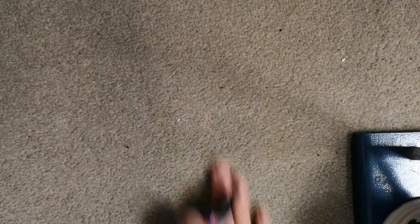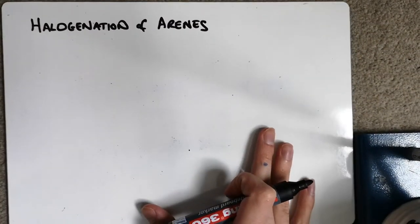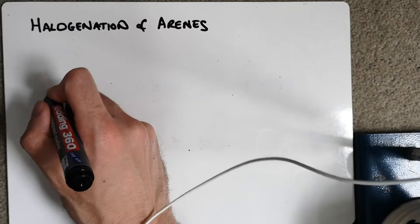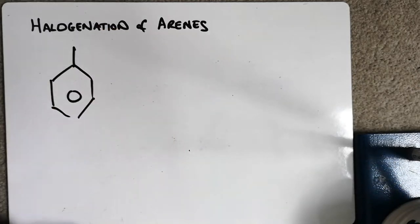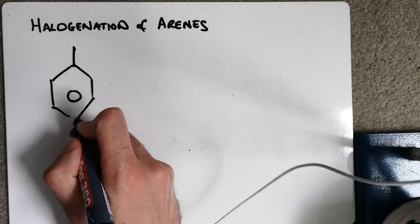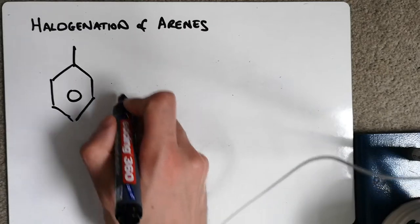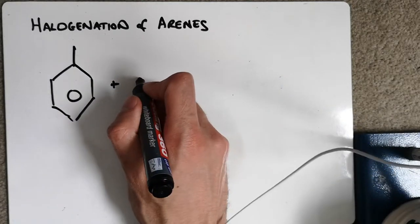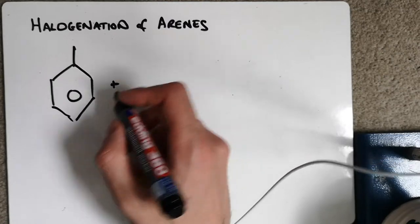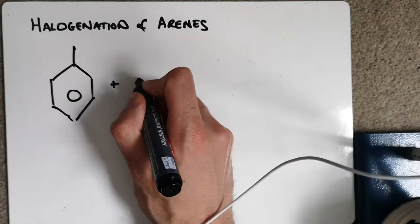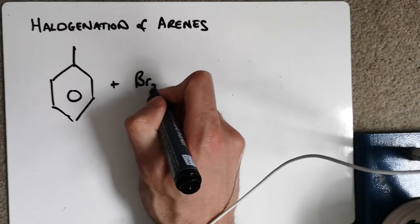So the second reaction we need to look at is when we have a halogen. So the same thing is going to happen again. Take my arene this time. Let's take a methyl arene. So I've just got a methyl side chain on there. This time I can react to it. And my halogens, they all exist as diatomic molecules. They don't like to go around on their own. So I'm going to add it to Br2.